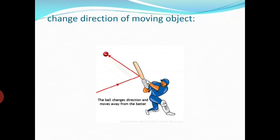The second effect is that force can change the direction of a moving object. As you people play cricket — when a moving ball comes toward you, you hit that ball with your bat. When you hit the ball with a bat, you can change the direction of that ball. You can change the direction of that moving object by applying force through the bat. So we can say that force can change the direction of a moving object.